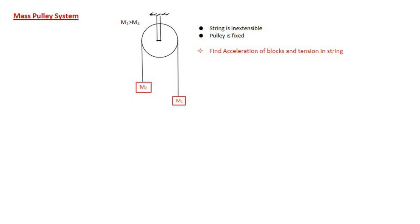Let us say the string has a tension T. There is tension T upward and the same tension T downward. Because the pulley is not moving and the string is inextensible, the tension in both sides of the string will be the same. Since m1 is greater than m2, block m1 must be going downward and block m2 is going upward. Let the acceleration of both blocks be a — the same acceleration because the pulley is fixed. If the pulley were not fixed, the accelerations would be different on both sides.